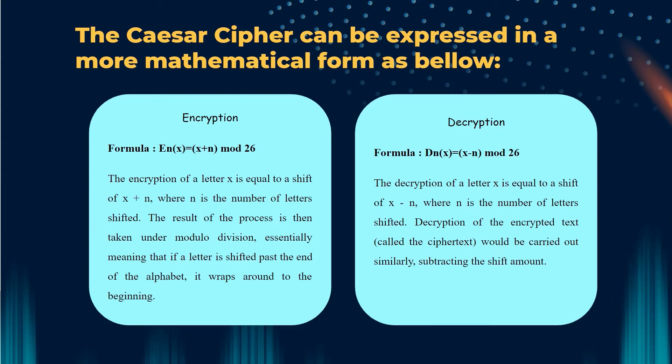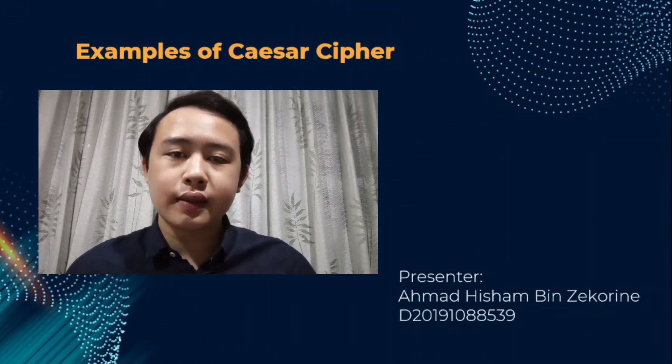The Caesar cipher can be expressed in the following more mathematical form as below. For example, in encryption, the formula is E(X) equals X plus N mod 26. So the encryption of a letter X is equal to a shift of X plus N, where N is the number of letters shifted. The result of the process is then taken under modular division, essentially meaning that if a letter is shifted past the end of the alphabet, it wraps around the beginning. While for decryption, the formula is D(X) equals X minus N mod 26. The decryption of the letter X is equal to a shift of X minus N, where N is the number of letters shifted. Decryption of the encrypted text would be carried out similarly, subtracting the shift amount.